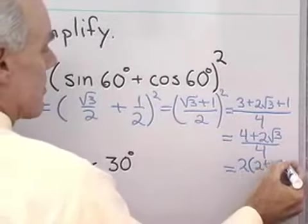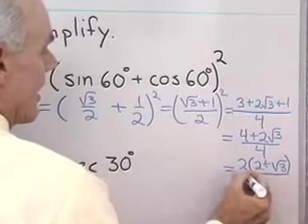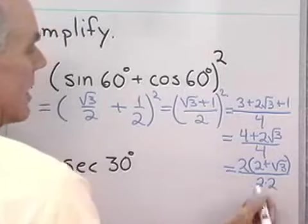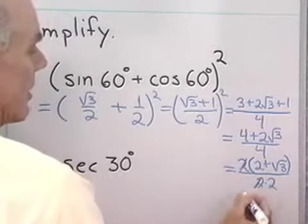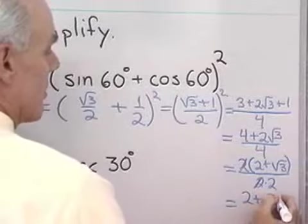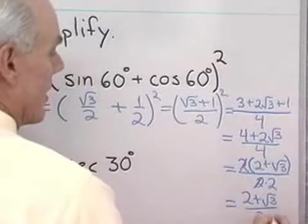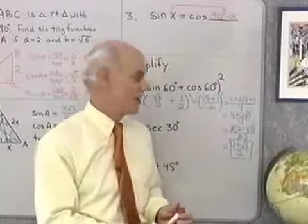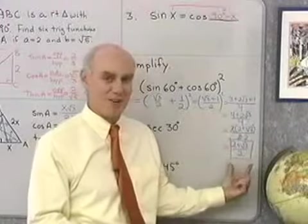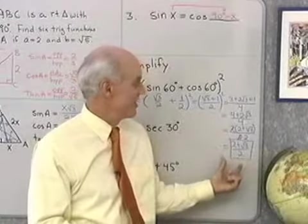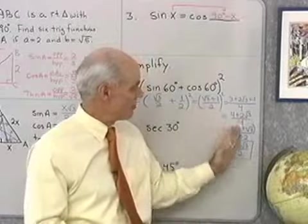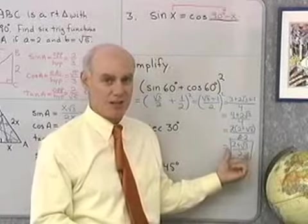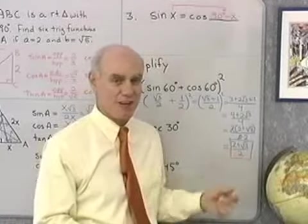I notice there's a factor of 2 common to both terms in the numerator, so I factor it out: 2 times the quantity 2 plus square root of 3, all divided by 4. That 2 is common to numerator and denominator, so the final answer is 2 plus square root of 3, all divided by 2. It's a long process, but a good review of algebra concepts for simplifying expressions with square roots.